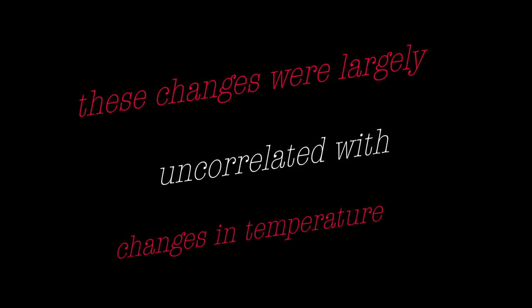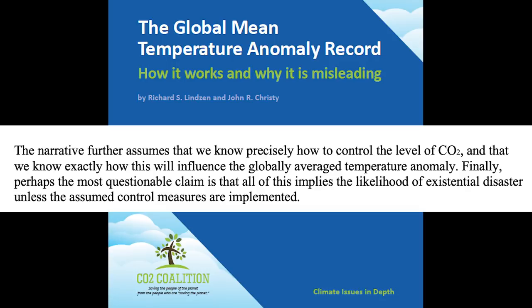Then the narrative asserts that changes in CO2 were primarily due to man's activities. There is indeed evidence that this link is likely true for changes over the past 200 years. However, over Earth's history, there were radical changes in CO2 levels, and these changes were largely uncorrelated with changes in temperature. The narrative further assumes that we know precisely how to control the level of CO2, and that we know exactly how this will influence the global average temperature anomaly. Finally, perhaps the most questionable claim is that all of this implies the likelihood of existential disaster unless the assumed control measures are implemented. In a logical world, it would be understood that the probability of the whole chain will be the product of the probability of each link, and so generally very small — and if any link is broken, the whole chain is broken.